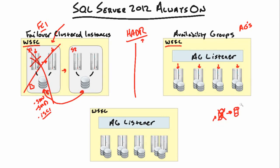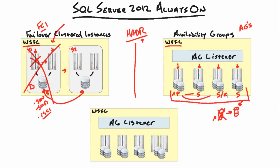Availability Groups take this to the next level. We have replicas — a replica is just a set of databases. We have a primary replica and up to four secondary replicas, all together called an availability group. Similar to database mirroring, data goes into the primary and gets pushed over to the secondaries. But the beauty is we can have active secondaries — we can even mark a secondary as read-only.